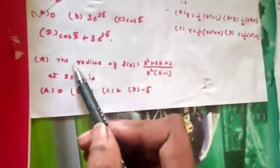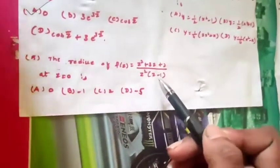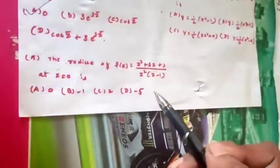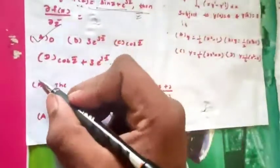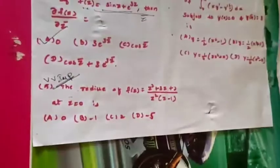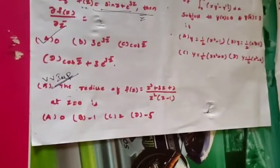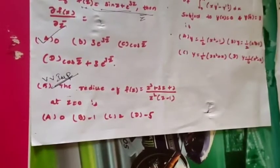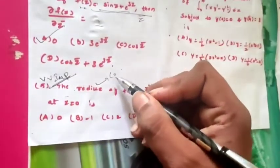The fifth question: find the residue of f(z) = (z²+3z+2)/(z²(z-1)) at z = 0. The options given are: (a) 0, (b) -1, (c) 2, (d) -5. This is from complex analysis and is a very very important concept and problem. In every year, exams like KSET, APSET, Kerala SET, Maharashtra SET ask at least one question definitely based on residues.